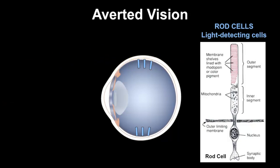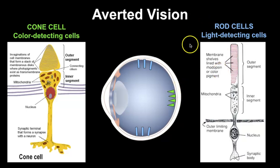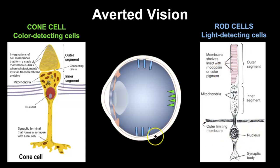So just to put this together: you have two different types of cells — cone cells that are concentrated in the center of the retina, and rod cells which are concentrated on the sides of the eye.